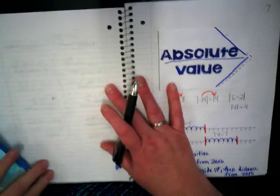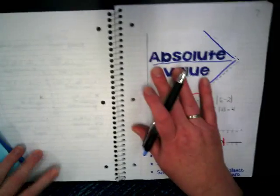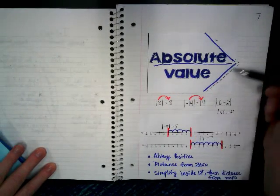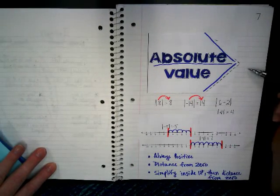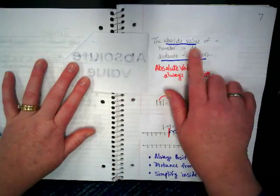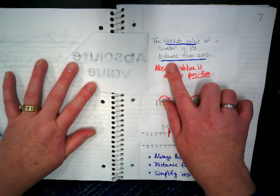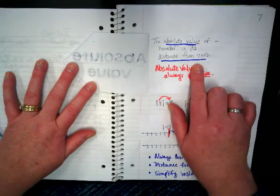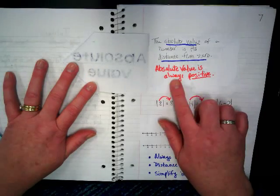Yesterday we made this foldable on absolute value, and if you remember, we made this arrow to show that it's always positive. Inside we have some notes that absolute value of a number is its distance from what number? Zero. And absolute value is always positive.